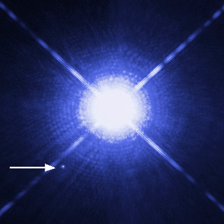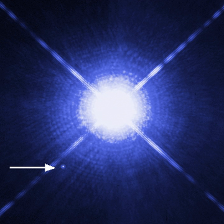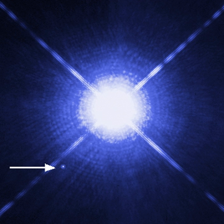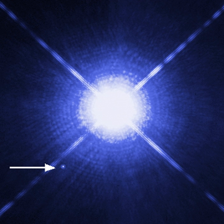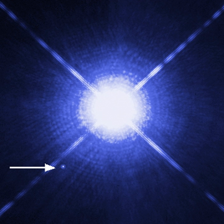A white dwarf is stable once formed and will continue to cool almost indefinitely, eventually becoming a black dwarf. Assuming the universe continues to expand, it is thought that in 10¹⁹–10²⁰ years the galaxies will evaporate as their stars escape into intergalactic space. White dwarfs should generally survive galactic dispersion, although an occasional collision between white dwarfs may produce a new fusing star or a super-Chandrasekhar mass white dwarf which will explode in a Type Ia supernova. The subsequent lifetime of white dwarfs is thought to be on the order of the lifetime of the proton, known to be at least 10³⁴–10³⁵ years. Some grand unified theories predict a proton lifetime between 10³⁰ and 10³⁶ years. If these theories are not valid, the proton may decay by complicated nuclear reactions or through quantum gravitational processes involving a virtual black hole, with the lifetime estimated to be no more than 10²⁰⁰ years.